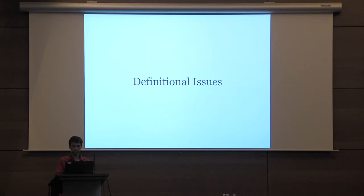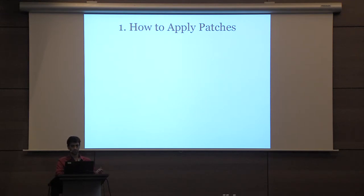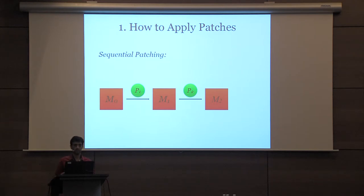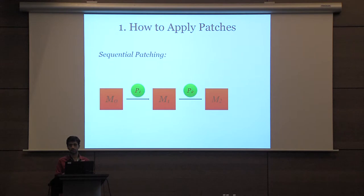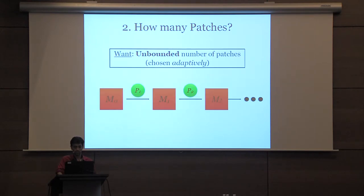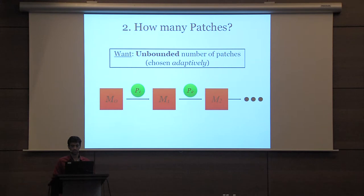There are some definition issues that arise. The first is: what is the patching process? As in updatable cryptography, we consider sequential patching, where initially you have a Turing machine M0, and you apply patches sequentially. You apply P1 on M0 to get M1, then a new patch on M1 to get M2, and so on. The second issue is how many patches we handle — ideally we want to handle an unbounded number, so the system parameters do not depend on the number of patches.